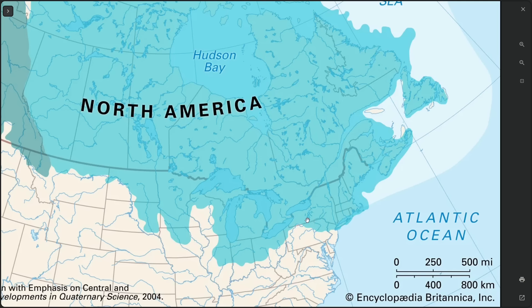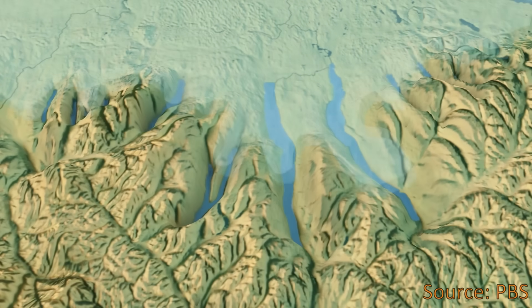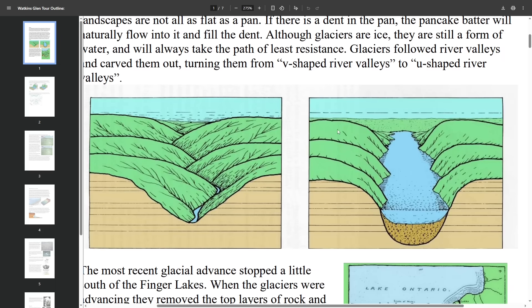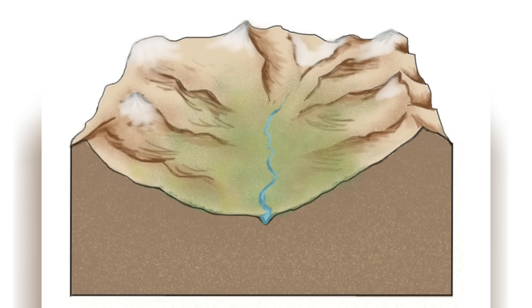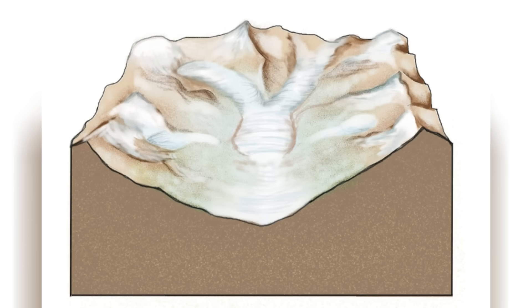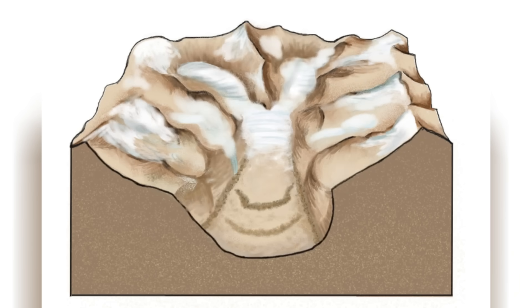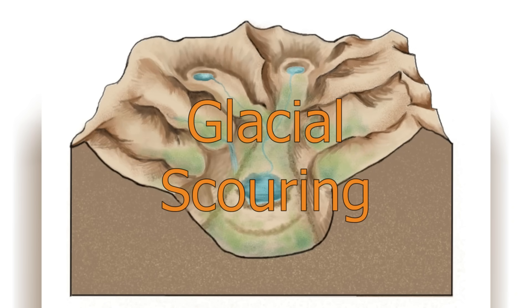During the Ice Age, the Laurentide Ice Sheet moved south over these river valleys, causing them to be deepened and widened drastically and also changing their shape. When rivers erode a landscape, they form V-shaped valleys. However, when glaciers moved in, their immense weight and size carved a different, U-shaped valley. As glaciers moved into these valleys, they scraped away the edges of the hills and carved a deep U-shape due to their weight. This process is known as glacial scouring.